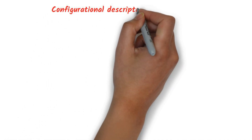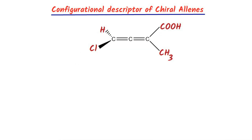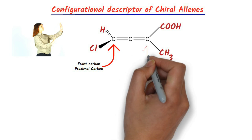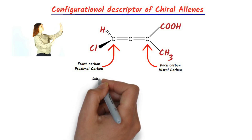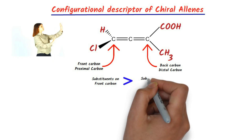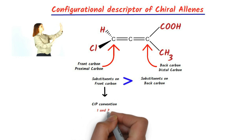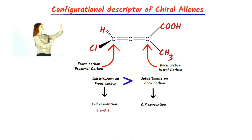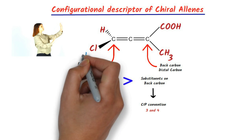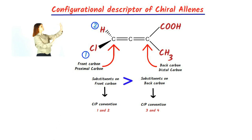We will now discuss the rules for assigning the configurational descriptor of chiral allenes. Consider this allene having different end carbon substituents — it will have a chiral axis and hence will be optically active. If we look at the molecule from this side, then this carbon becomes the front or proximal carbon, whereas this carbon becomes the back or distal carbon. Remember that substituents on the front carbon get priority over the substituents on the back carbon. Then, substituents on the front carbon are prioritized as per CIP convention and given preferences 1 and 2, whereas substituents on the back carbon are given preferences 3 and 4. Thus, on the proximal carbon, chlorine gets number 1 and hydrogen gets number 2; on the distal carbon, the carboxylic carbon gets number 3 and the methyl carbon gets number 4.